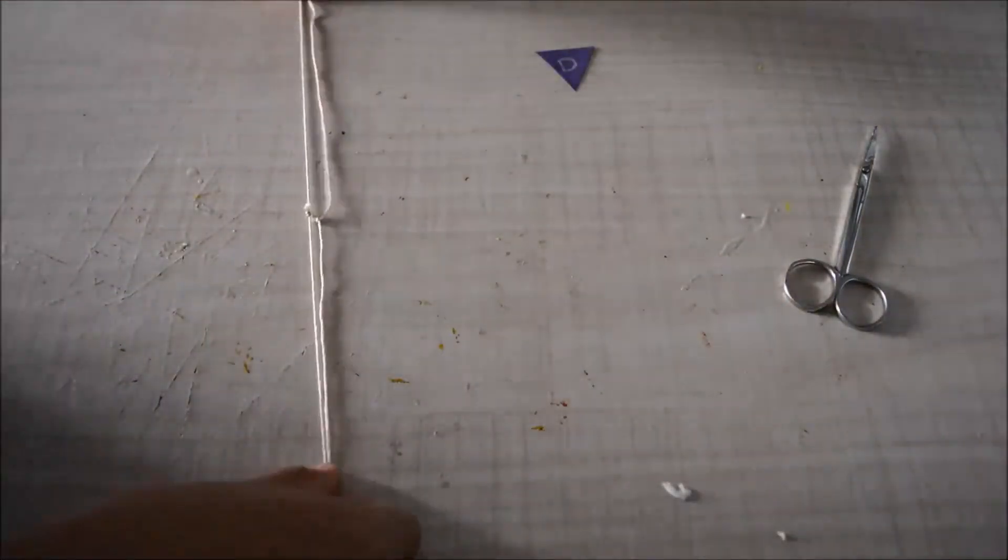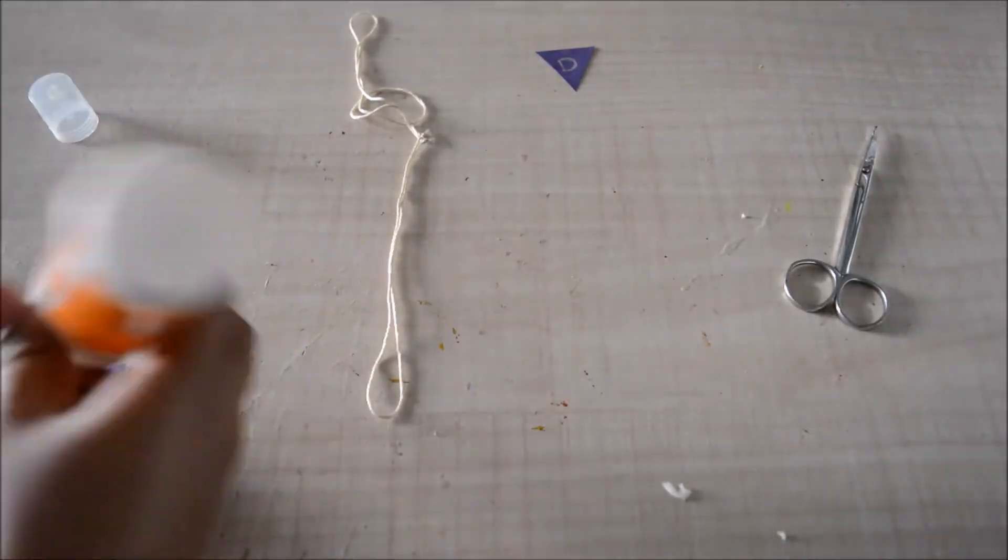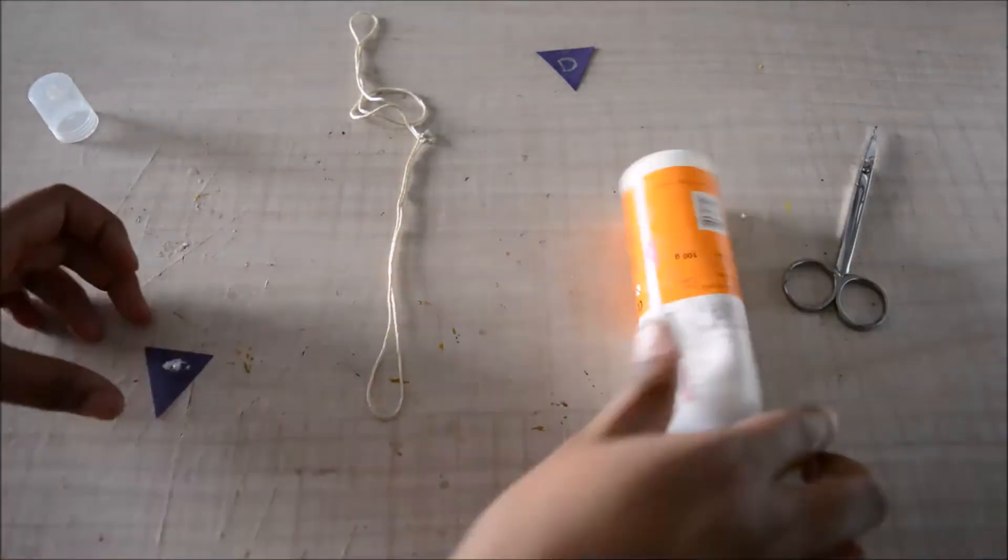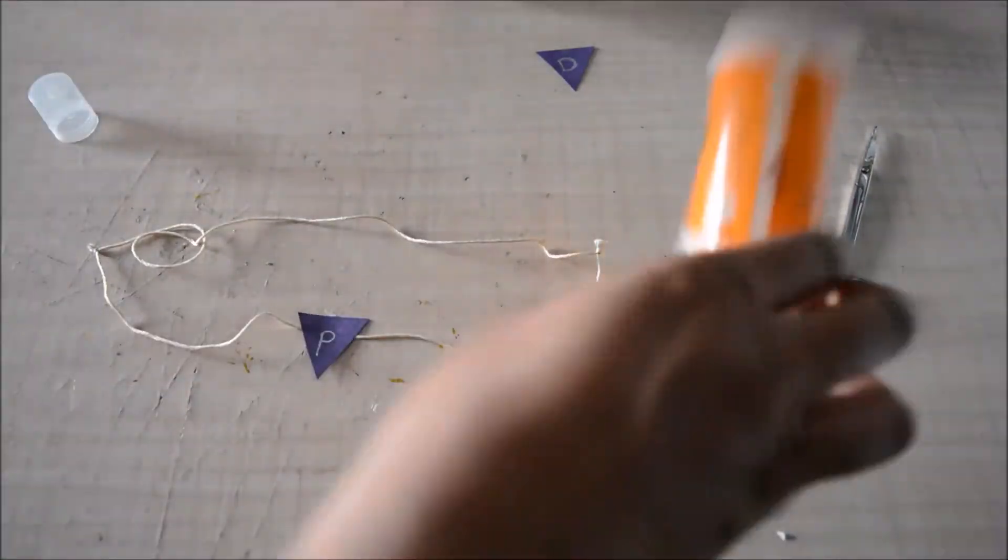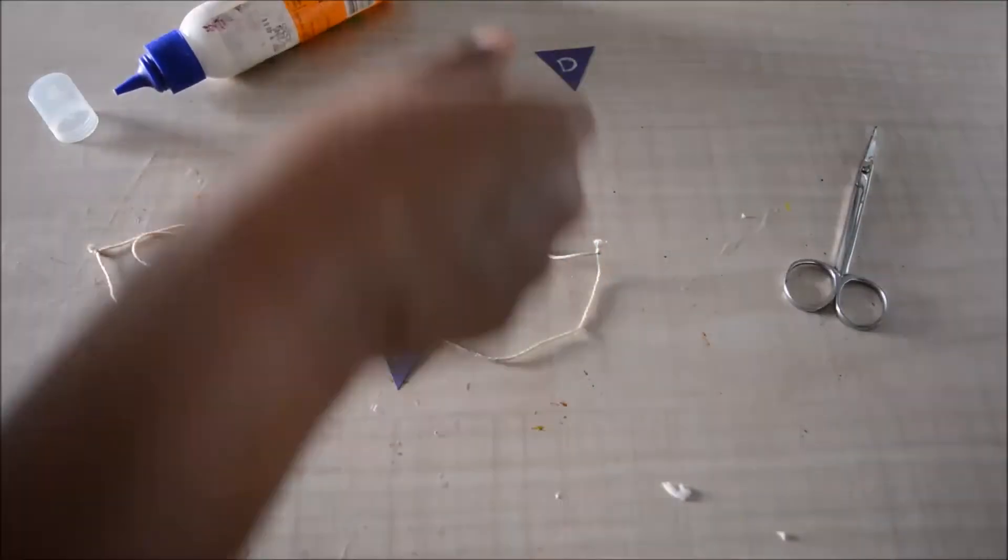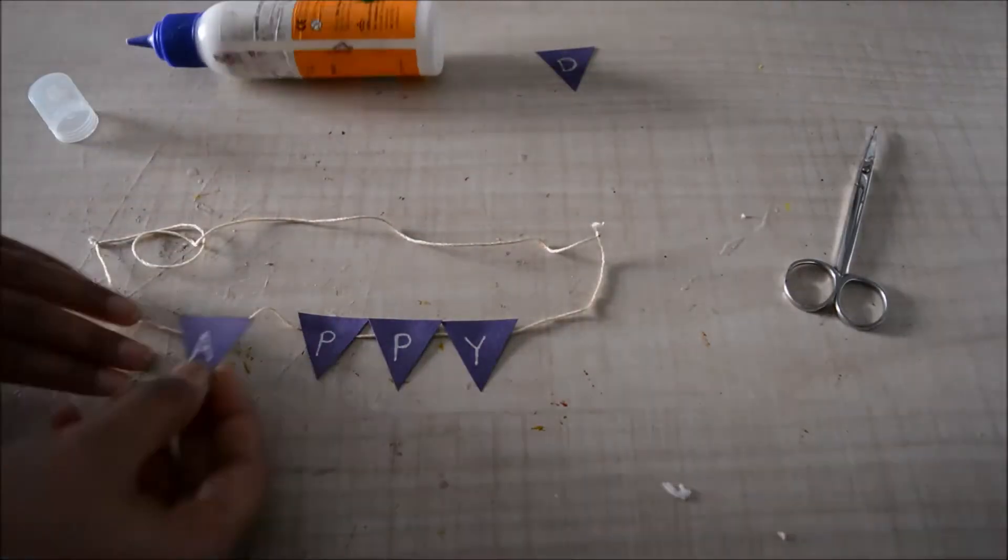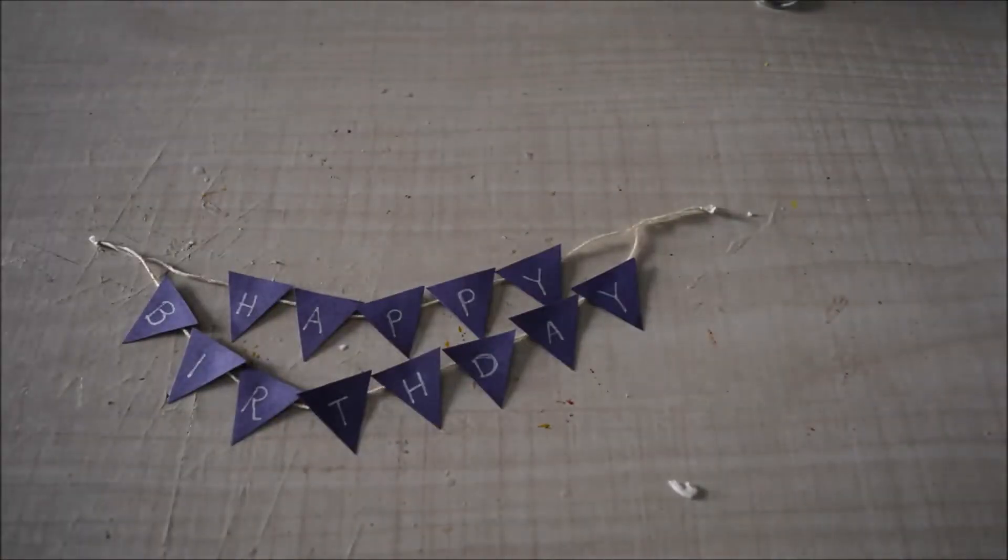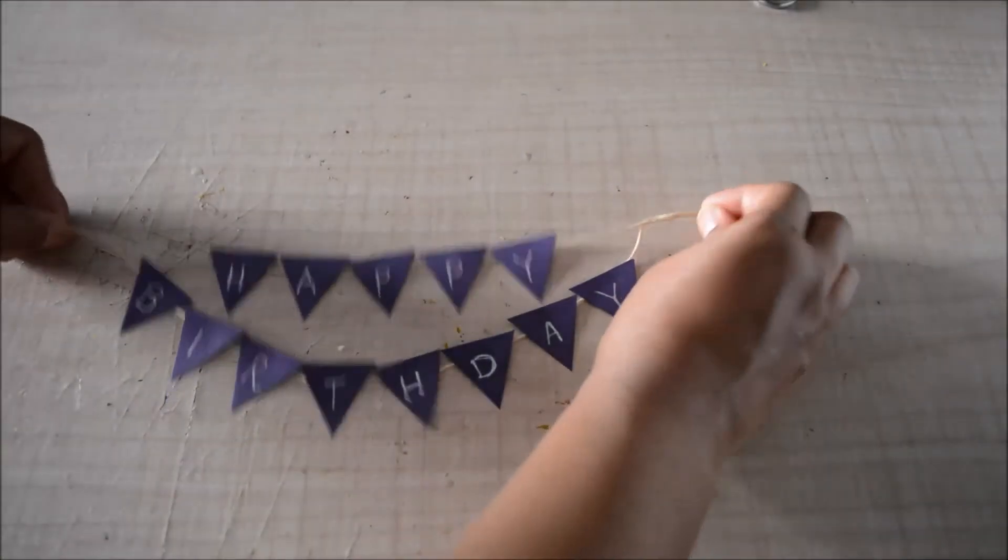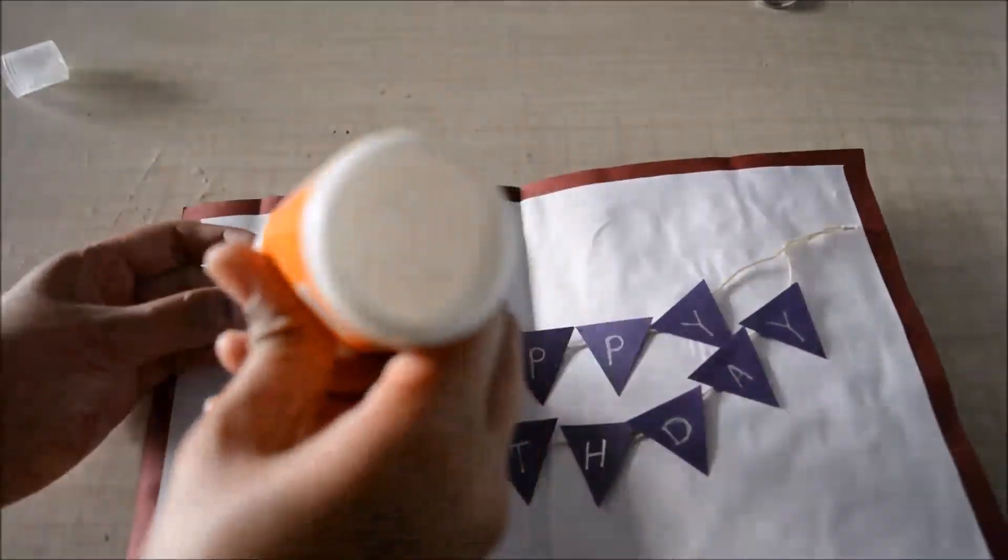Then I'll keep the card aside and join the knots and take the smaller thread. So when I join the two knots I'll get the center on which I'll stick the middle letter, that is P, and then I'll stick the other letters of the word happy. I'll do the same thing with the word birthday. So here are my happy birthday letters. Now I'll take the card and stick the two knots of the thread on the card.